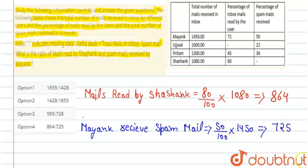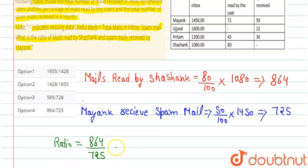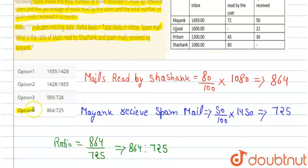Now we have to find the ratio of Sasank's mails read to Mayank's spam mail. That is 864 upon 725. So the required ratio is 864:725. Therefore, option 4 is correct. Thank you.